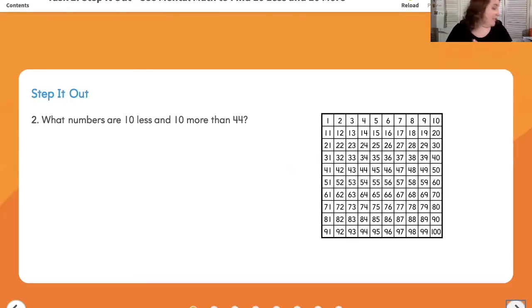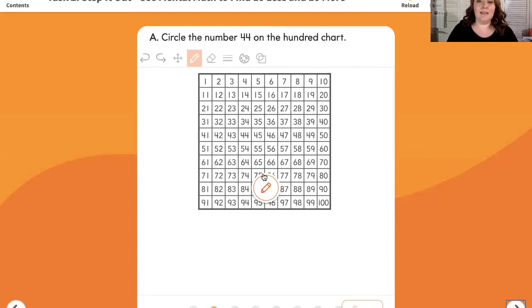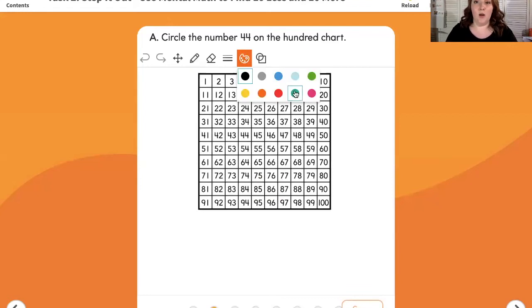Let's turn to page 380. Step it out. Number two, what numbers are 10 less and 10 more than 44? Letter A says, circle the number 44 on the hundred chart. So I'm going to pick pink and I'm going to circle the number 44 on my hundreds chart.